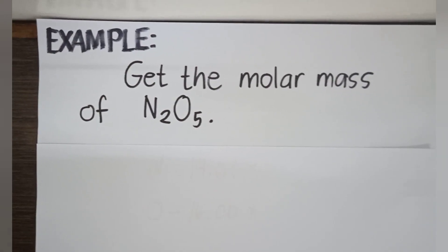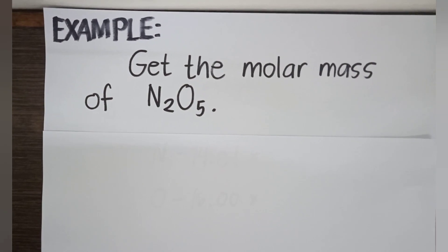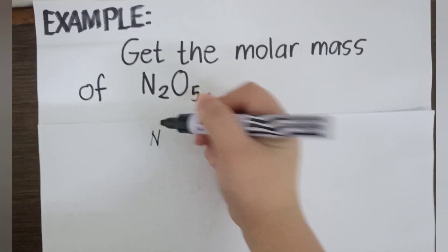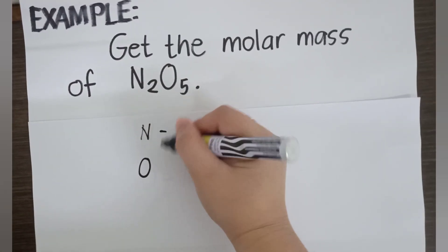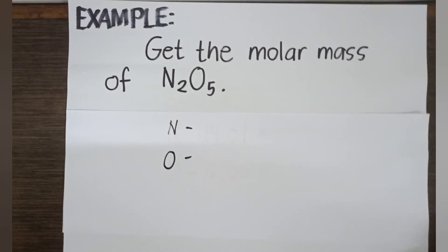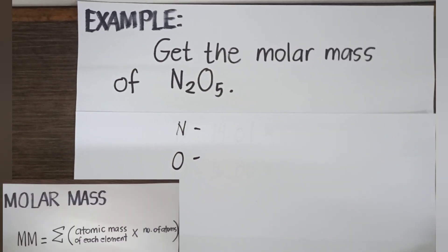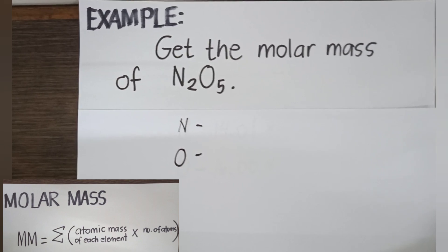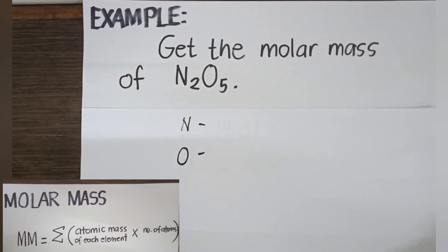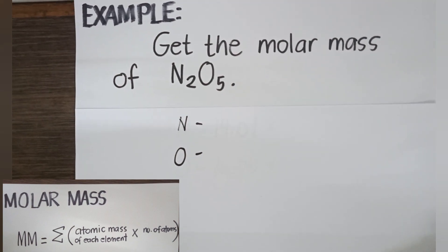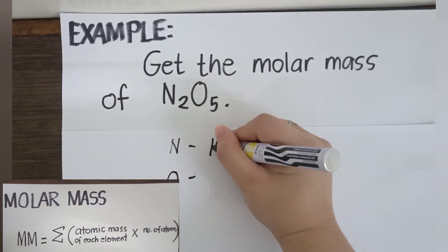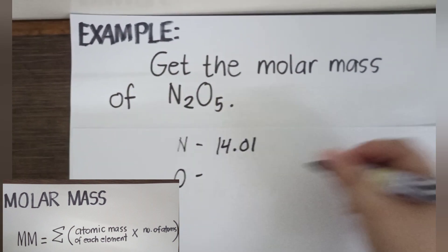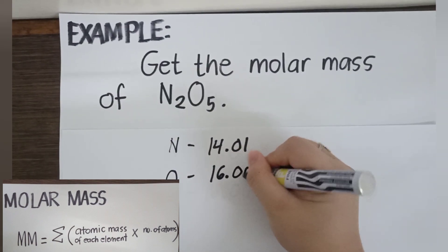First example: get the molar mass of dinitrogen pentoxide. The first step is to list down the elements in the compound — nitrogen and oxygen. Following the formula, we take the summation of the product of the number of atoms and the atomic mass of each element. The atomic mass of nitrogen is 14.01 and oxygen is 16.00 grams, as based on the periodic table.